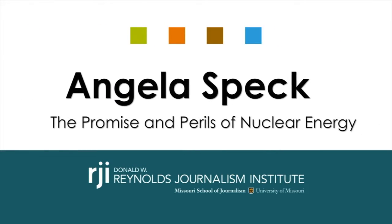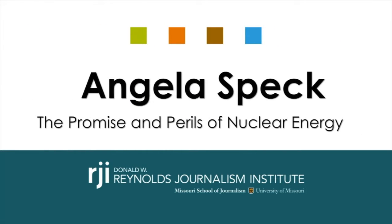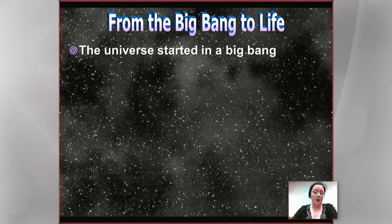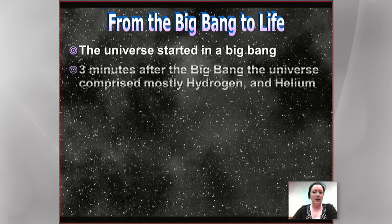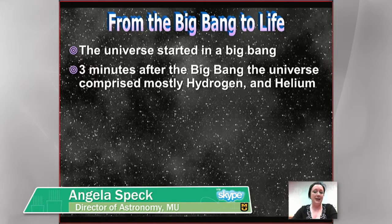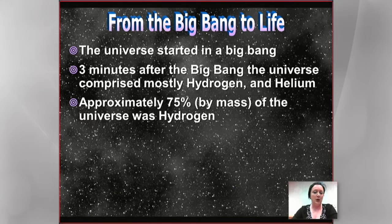Hello everybody. I'm going to start with talking about the Big Bang. Assuming that we accept the Big Bang as the origin of the universe, then we've got the universe starting about 14 billion years ago, and everything is contained in this tiny little space, and it's getting bigger and bigger. After about three minutes, the universe is made of hydrogen and helium and nothing else. The problem is that we don't contain much hydrogen and helium, so we need to think about where other elements come from.